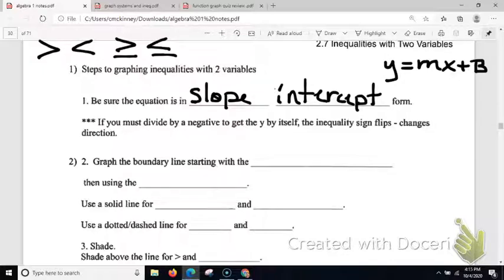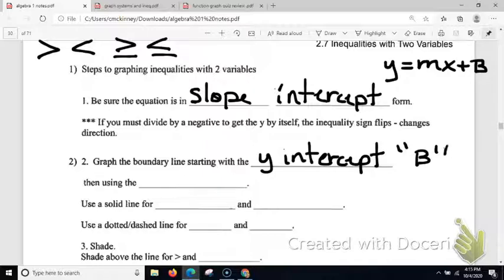So when we graph the boundary line, just like if we were graphing anything in slope-intercept form, what do we start with? We start with the b, the y-intercept. So we're going to start on the y-intercept, also known as the b. And then use the slope. Then we're going to move with the slope to get a second point.